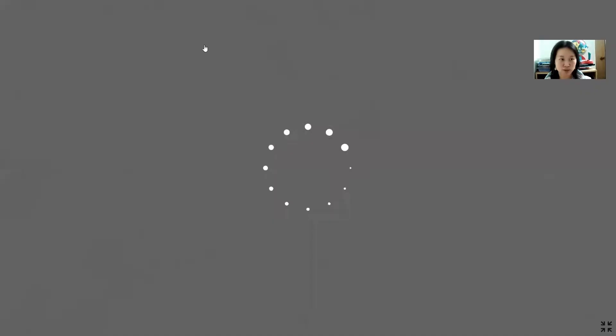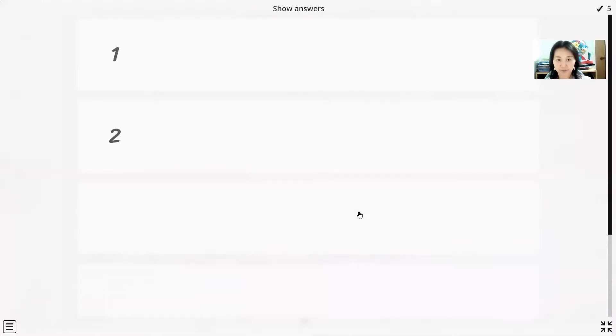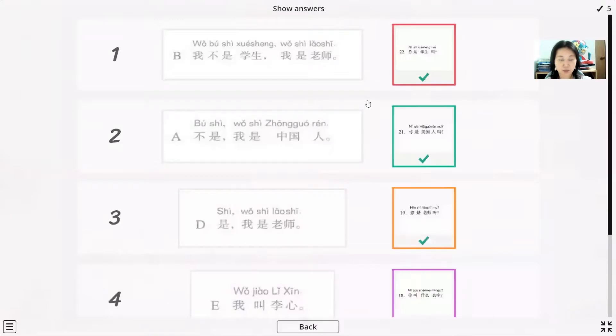Just we see about this dialogue. The first one we just see about this one, ni shi xuesheng ma. The answer is wo bu shi xuesheng, wo shi laoshi. The next one question about the nationality, we always use the shi shema guoren ma.